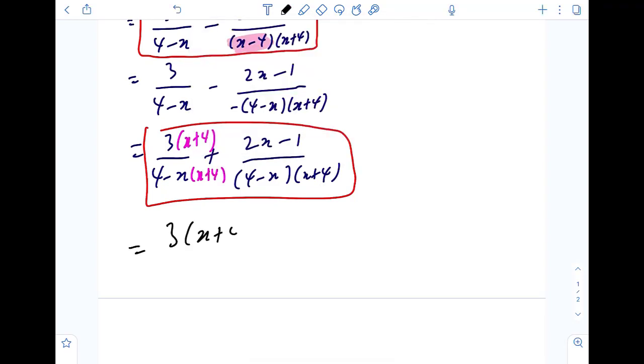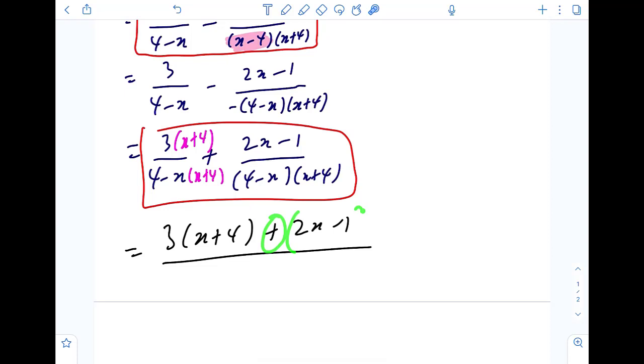3 times x plus 4, plus 2x minus 1. Okay, if this was to be a minus, please put a bracket. Take note of that, because if this was to be a minus, your signs inside the bracket will change. Denominator is now the same, that's why we can combine the numerators.